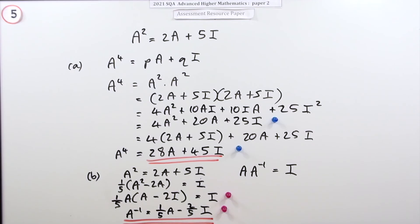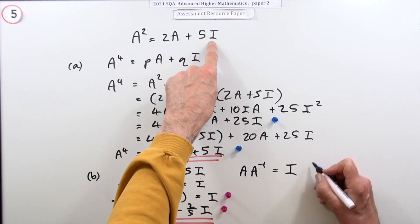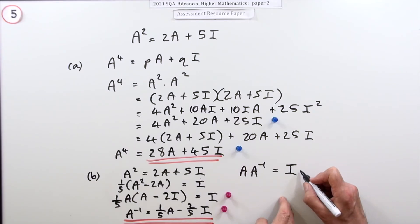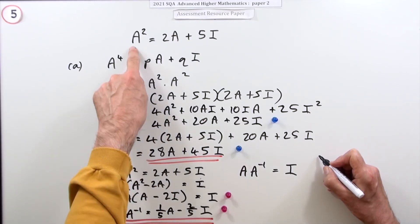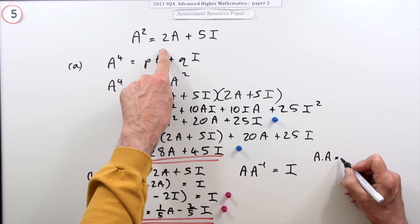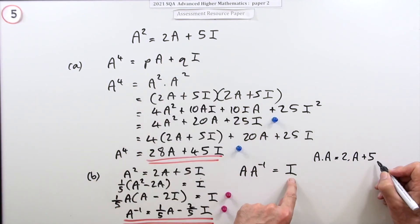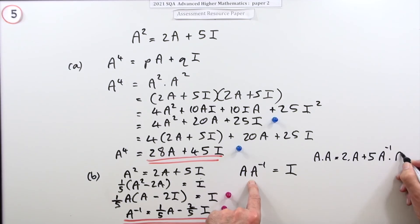The multiplication—or just do the other way, the multiplication would be to replace that term. Maybe there's other ways, so I'll just start here. If I rewrote that as A times A is 2 times A plus 5 times—now I am going to write it as A inverse times A because that's the same both ways round.